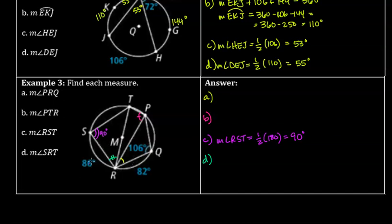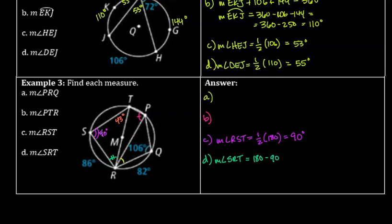I see arc SR labeled as 86 degrees, and angle STR intercepts that arc. Although that's not one of the angles I need to find, angle STR = half of 86 = 43 degrees. Now I have a triangle where two angles are known: 90° and 43°. So angle SRT = 180 − 90 − 43 = 47 degrees.